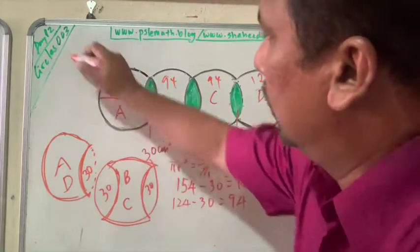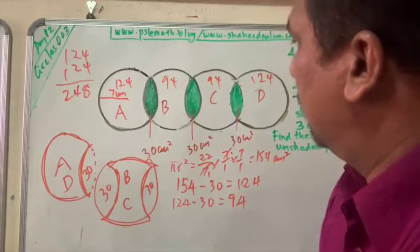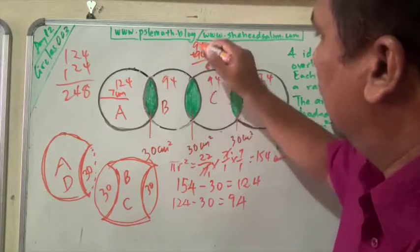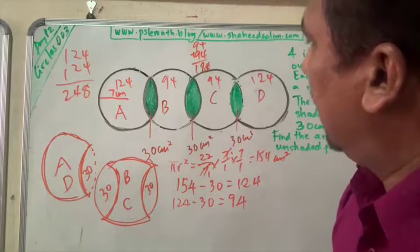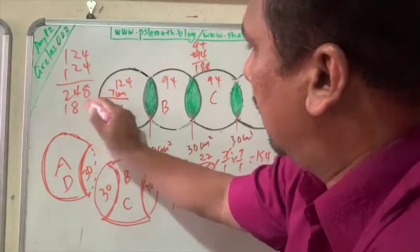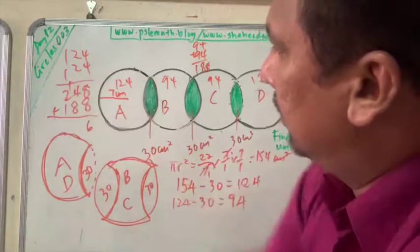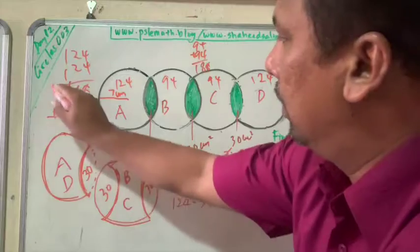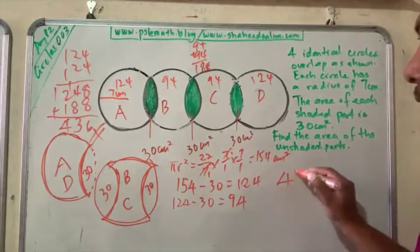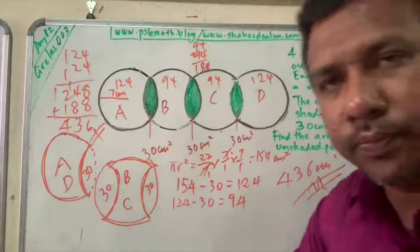Let's see. 124 plus 124 equals 248. 94 plus 94, you get... 9 plus 9 is 18, 188. So 188 plus 248... 13, 4. So the answer is 436 square cm. This is your answer. It's that simple.